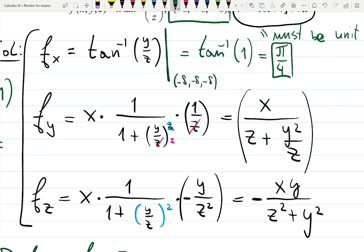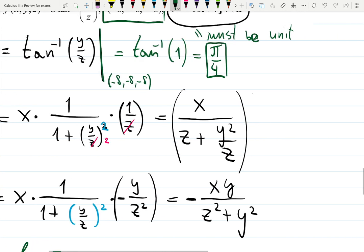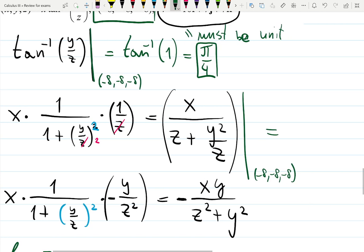Now, at (-8, -8, -8), this bar means at, that's a very common notation. For the partial derivative with respect to y will be -8 and -8 and -64 over 8, which is apparently 1 half. That's what I see in my notes.